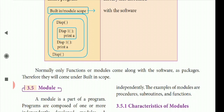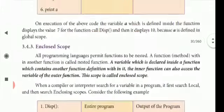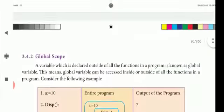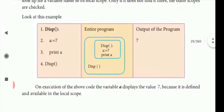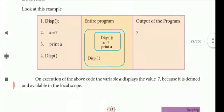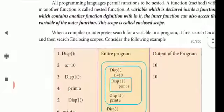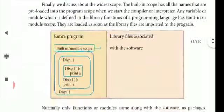So this is built-in scope. These are the four types of scope. These are very important and easy questions — this is a book-back question. We have learned all the modules and will see the next class on modules.